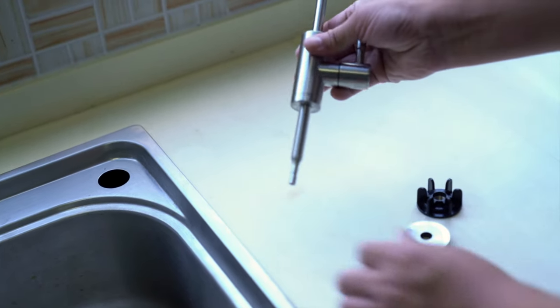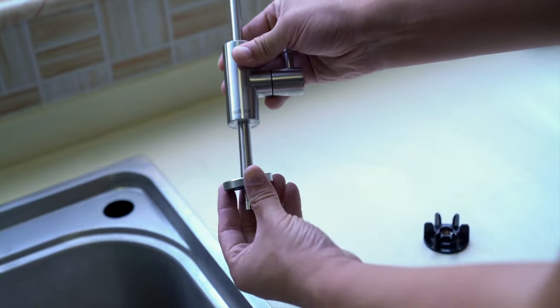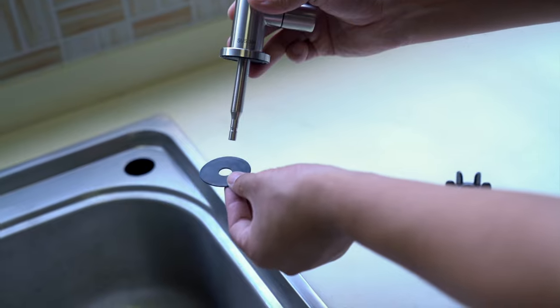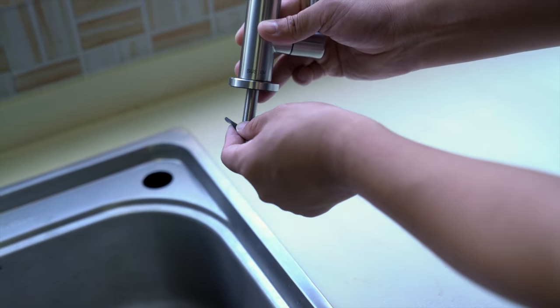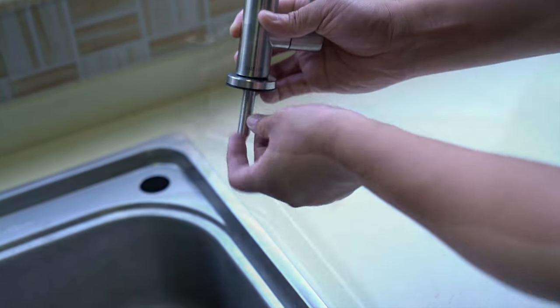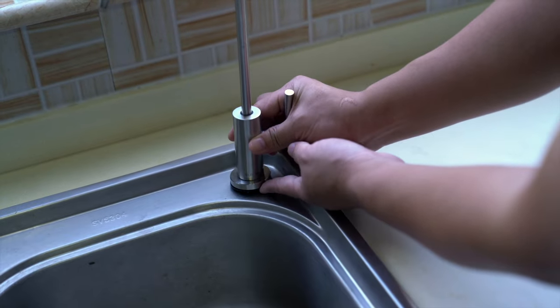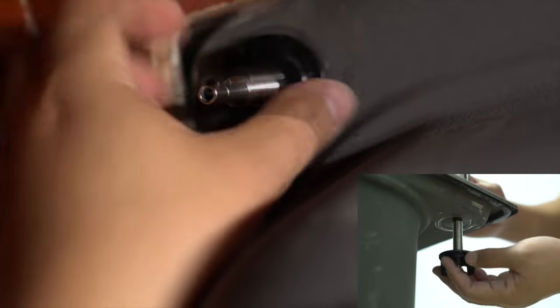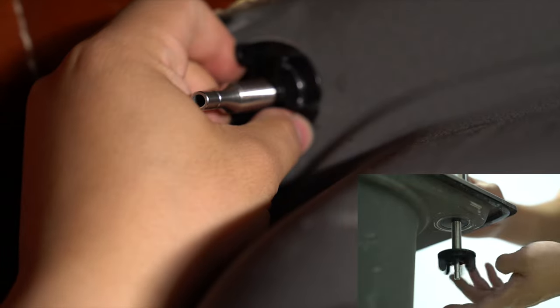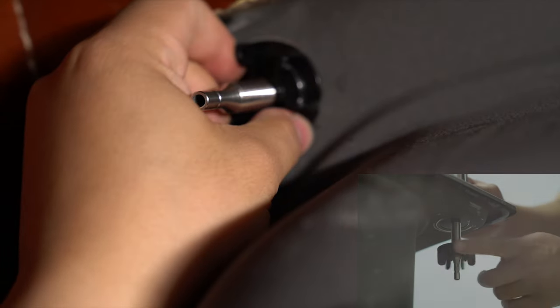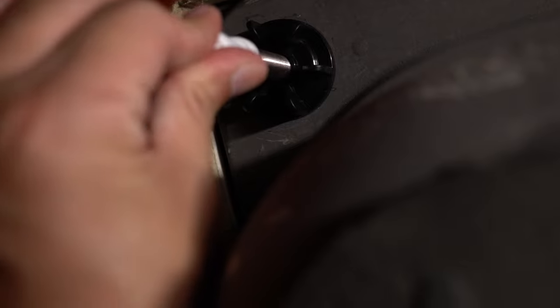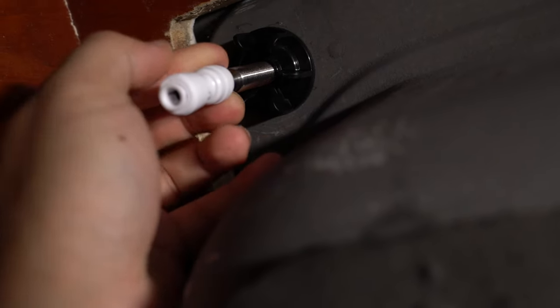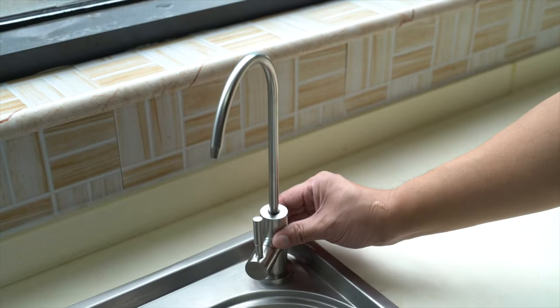Before inserting the faucet assembly into the sink mounting hole, fit the faucet base gasket over the valve stem and place assembly through the hole. You can now install the lock nut onto the faucet stem thread under the sink and tighten it firmly. Install the Quick Connect straight adapter to the faucet stem. Make sure the sink faucet feels secure and will not twist during use.